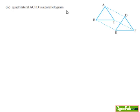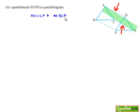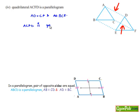For the fourth part, quadrilateral ACFD is also a parallelogram. From the above, we got that AD is equal to CF and AD is parallel to CF. So we can say that if in a quadrilateral the opposite sides are equal and parallel, ACFD is a parallelogram.